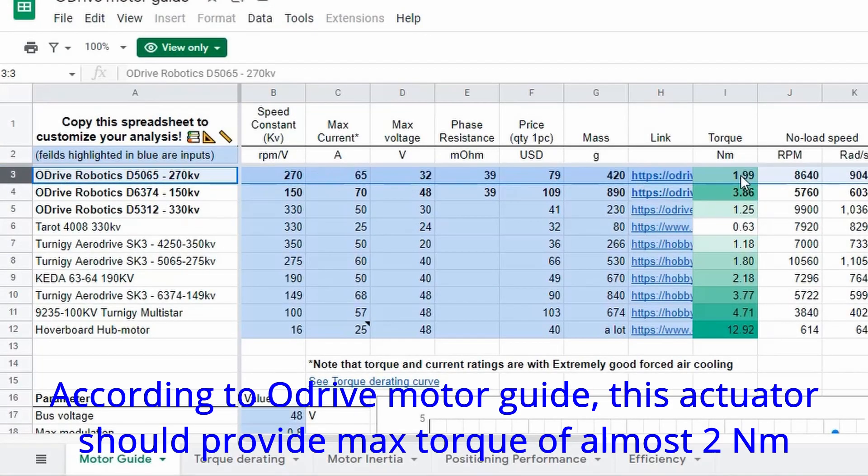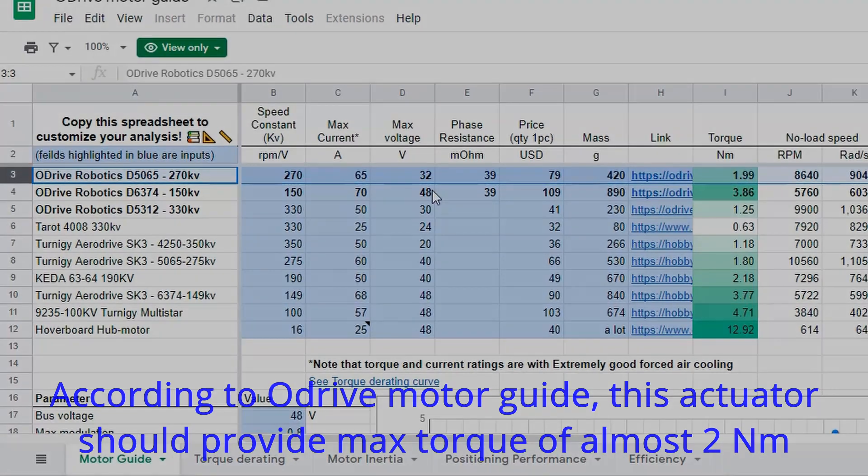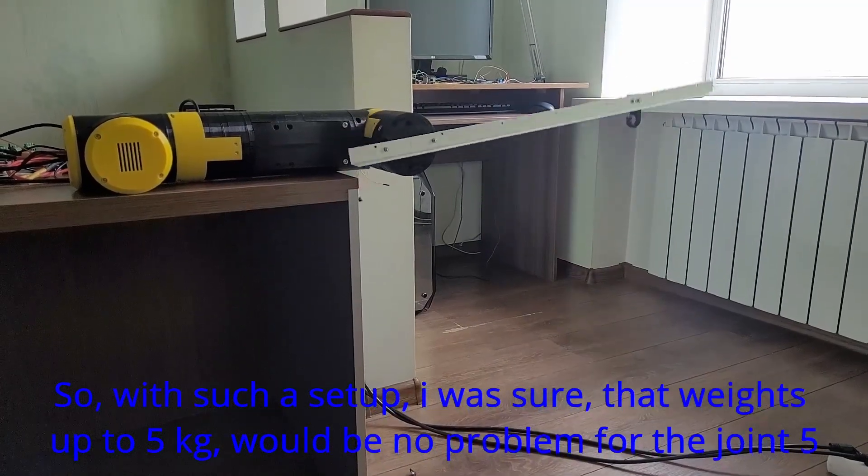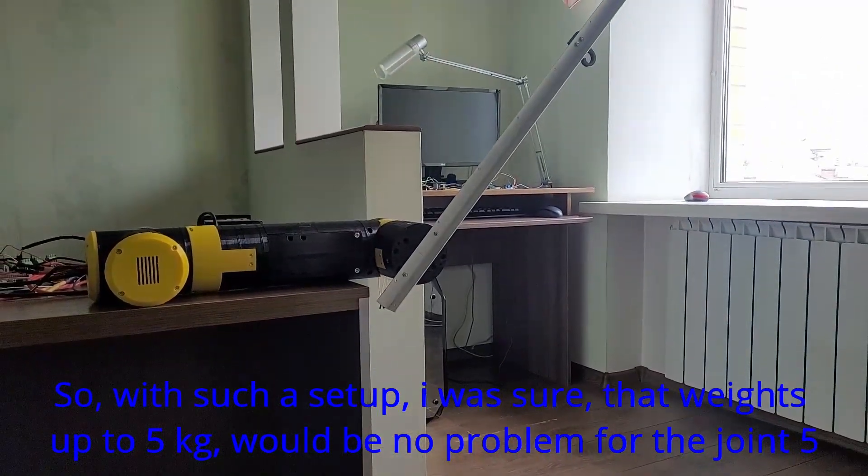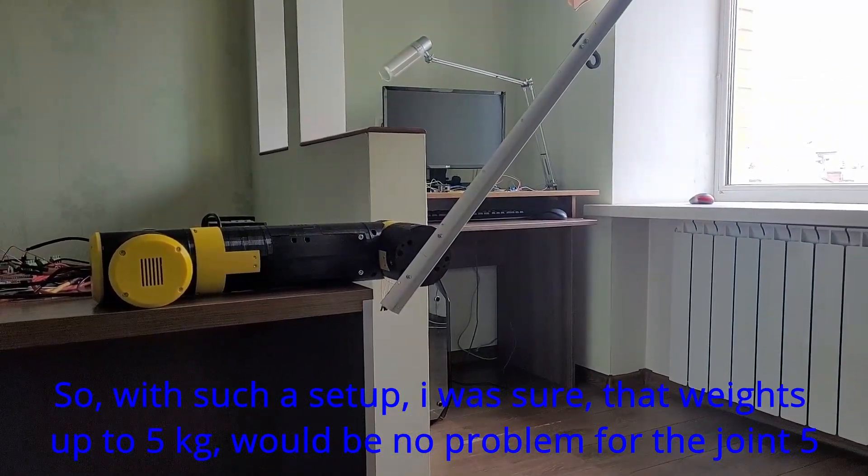According to a drive motor guide, this actuator should provide max torque of almost 2 Nm. So with such a setup I was sure that weights up to 5 kg would be no problem for the Joint 5.